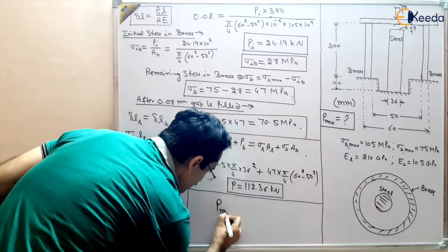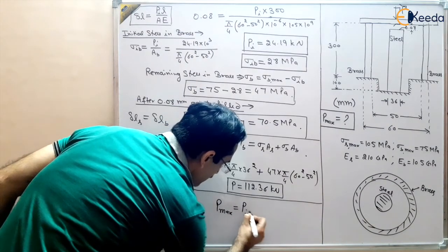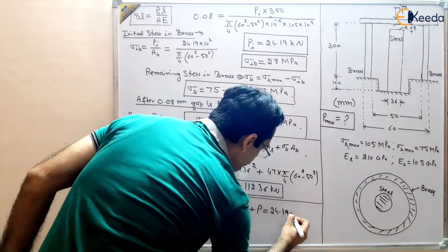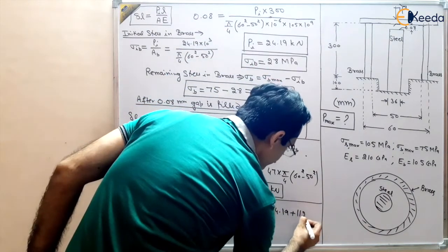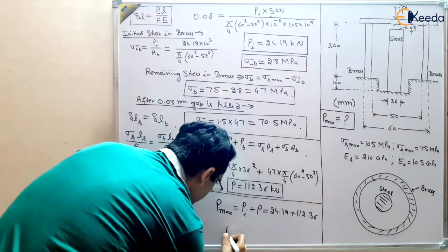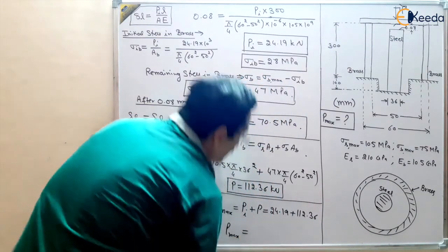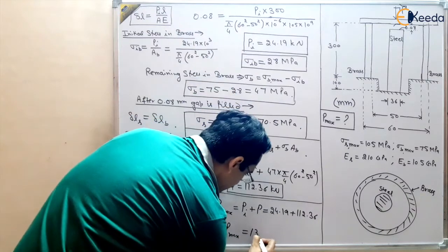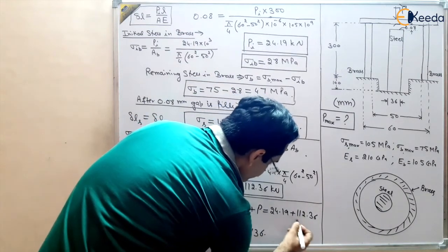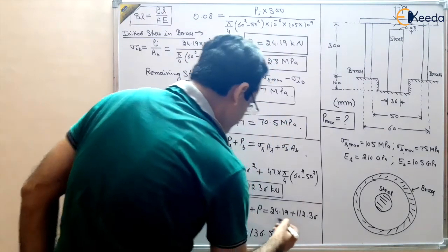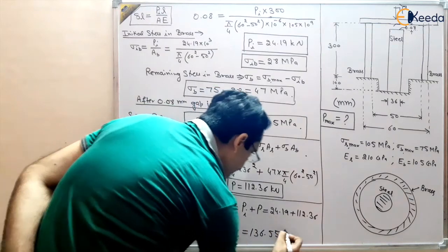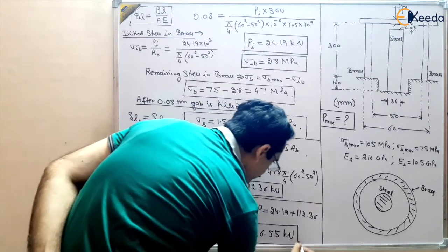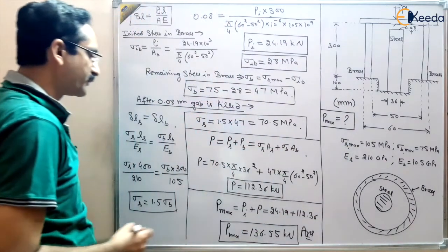P_max equals the initial load plus the load applied later: 24.19 + 112.36 = 136.55 kN. This is the maximum load which can be applied on this bar so that stresses do not exceed their limits — this is the maximum load for the safety of this composite system.